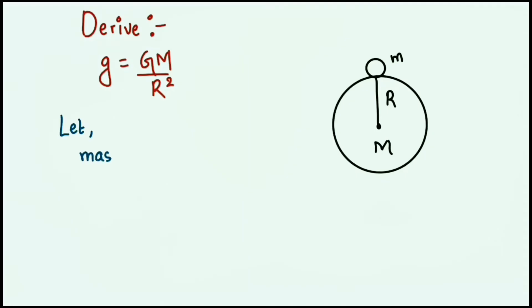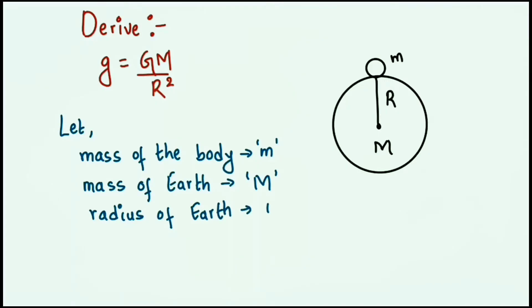Now we are going to write the same thing in sentences. So let mass of the body be small m, mass of the Earth be capital M, radius of the Earth be capital R, and since we are talking about acceleration due to gravity, let acceleration due to gravity be small g.